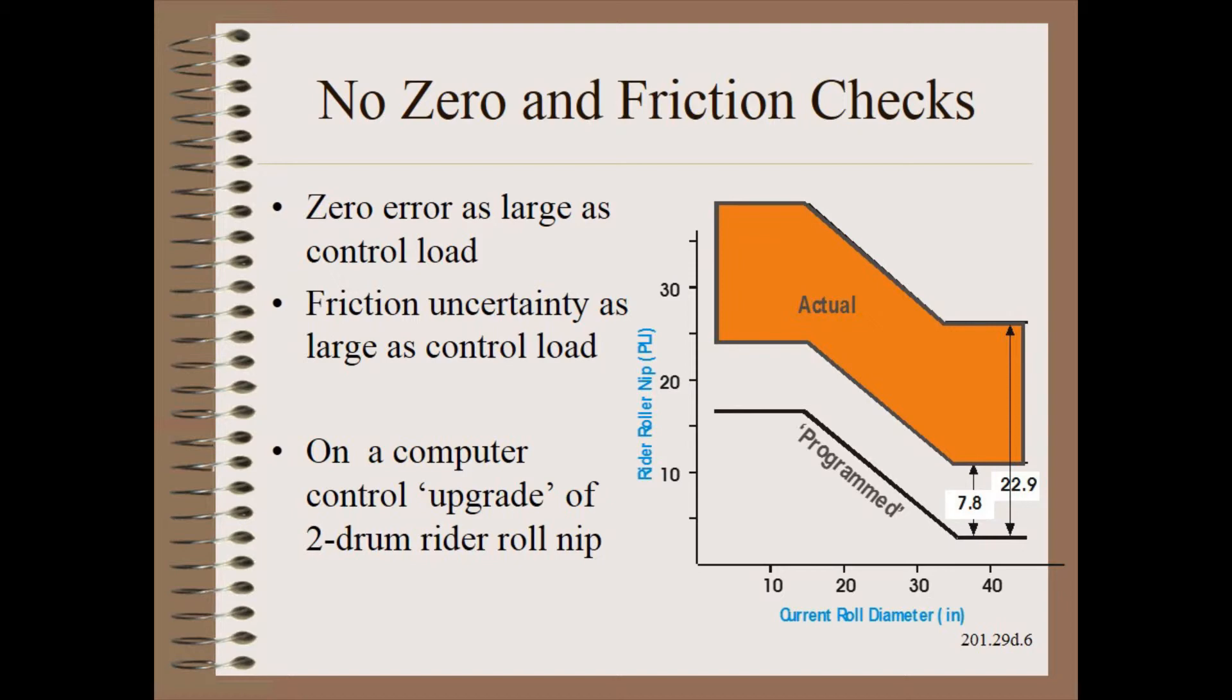The net result was the zero error was as large as the control load. The friction uncertainty was as large as the control load. The computer control nip was probably worse than the originally supplied cam control nip.